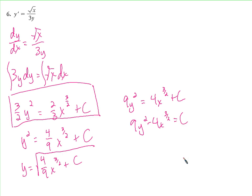Looking at the solutions manual, they multiplied through by 6 to cancel the 2 and 3, giving 9y squared equals 4x to the three-halves plus C. Rearranged, 9y squared minus 4x to the three-halves equals C. You could do it that way too — it's still a relationship between x and y.